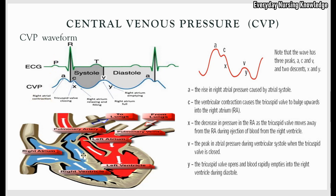As the right atrium contracts, blood flows to the right ventricle and there is a decline in pressure. This is interrupted by the C wave. The C peak occurs because as the right ventricle receives blood it starts to contract, and as a result the tricuspid valve moves up towards the right atrium, causing a slight increase in pressure that produces the C wave. It follows the QRS complex because the QRS represents ventricular contraction.